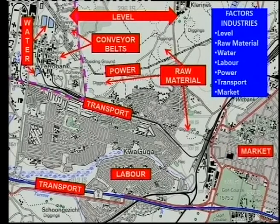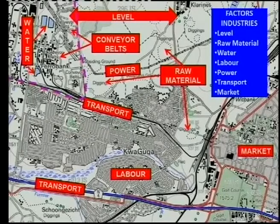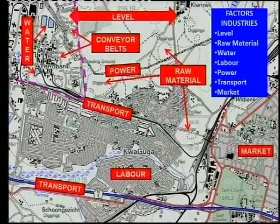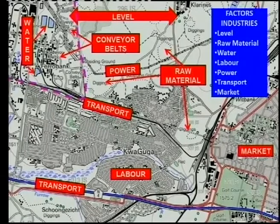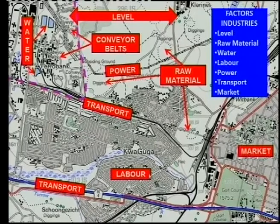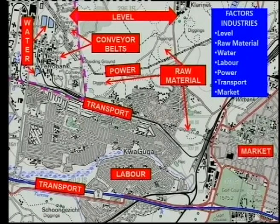And then also, the market — the urban settlement that can serve as a market. And remember, the market is much further than this, because this is part of a PWV area, and perhaps overseas markets as well, but you can't see this on the map. So please remember, the only things that you can mention are the things that we find on the map. You see it's a level area, there are raw materials, there's water, conveyor belts, transport by means of railway as well as road, labour, and the market. You must refer to your map when you answer this question.